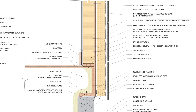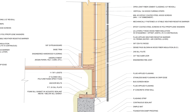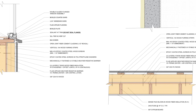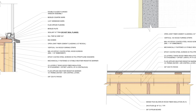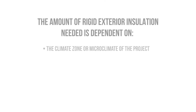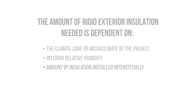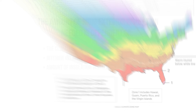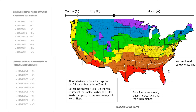At a minimum, we want to install enough rigid insulation outboard to prevent condensation on the backside of the sheathing. This amount will vary depending on the climate or microclimate that you're building in, the relative humidity that you're operating under, and the amount of insulation that's been installed interstitially. I'll put up the minimum recommended ratios from Building Science Corporation that were the basis for current building codes, but understand that more is better in this case.